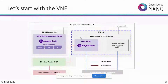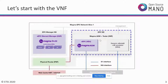We'll concentrate on the VNF part: the Magma access gateway VNF. This VNF consists of two different elements in two different VDUs — the ultimate deployment units of your network function. These VDUs will be VMs provisioned in your infrastructure manager. The first VDU is the Magma access gateway VDU, which is the main EPC element and core component.